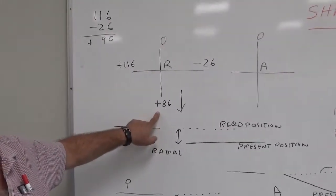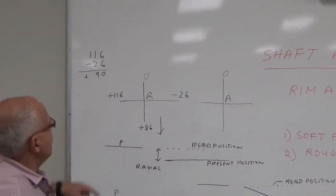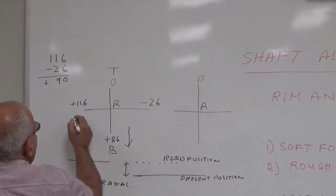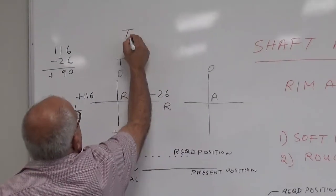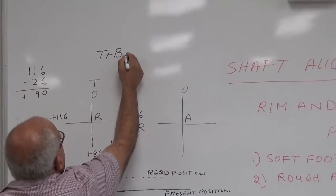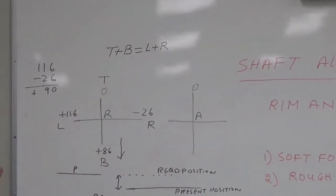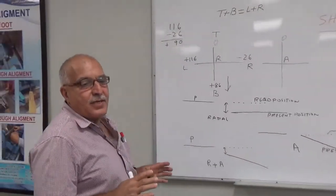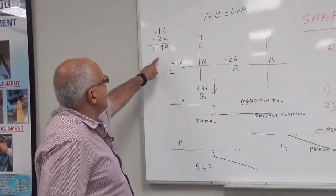So it means I have taken the correct reading all the time. Top plus bottom should be equal to left plus right. It does not mean that the alignment is good, it means that you have taken the reading correctly. The reading is correct now.